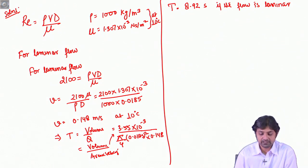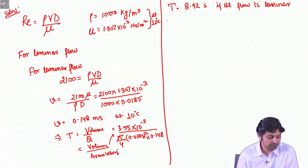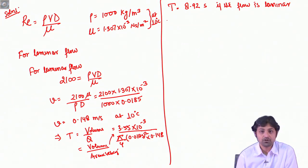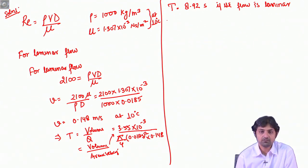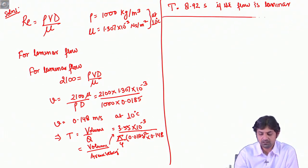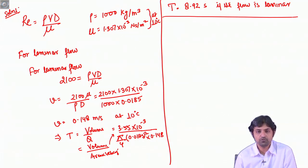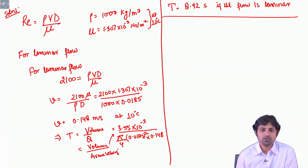The second part asks: what is the maximum time taken to fill the glass if the flow is to be turbulent? The turbulent regime starts from Reynolds number 4000. If the velocity is high, the time taken will be very less, but here the question is maximum time for turbulent flow. Maximum time corresponds to minimum velocity, and the minimum velocity required for turbulent flow corresponds to Reynolds number 4000.